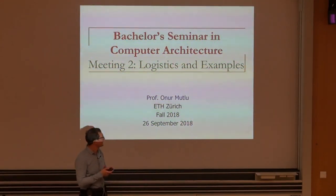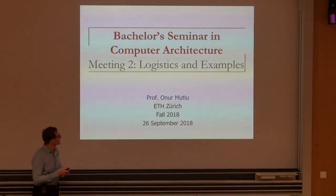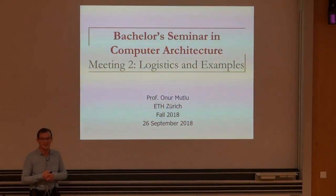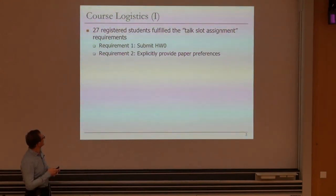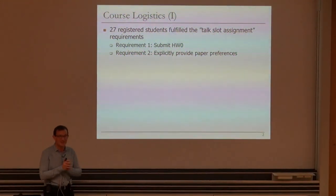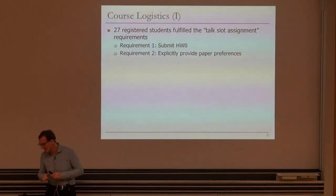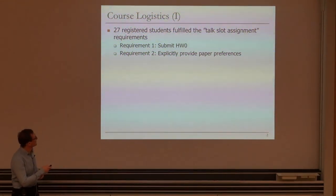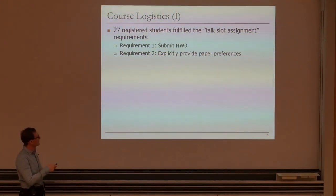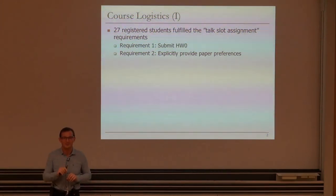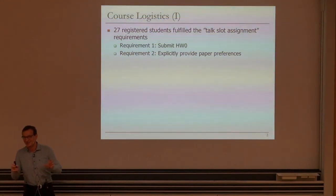Let's get started. This is our second meeting for the seminar course, and you had some homeworks to do. Only 27 registered students, which is still more than the slots we have, but we can accommodate 27, submitted the homework and fulfilled the talk slot assignment requirements. The requirements were to submit homework zero and explicitly provide paper references. 27 people did that — actually 28, and then one person dropped the course, so now it's 27.